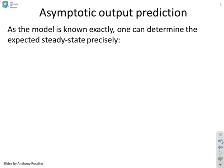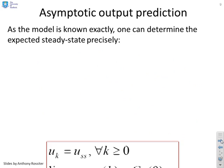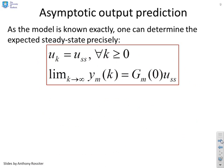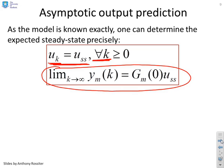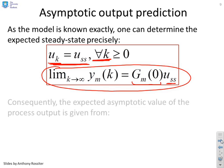So asymptotic output prediction. As the model is known exactly, you can determine the expected steady state of the model precisely. So if I tell you that UK is going to be USS for all future K, then you can tell me that the asymptotic value of the output must be the steady-state gain of the model, that's GM of zero, times USS. That's easy to discern.